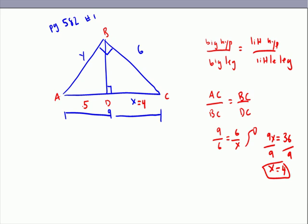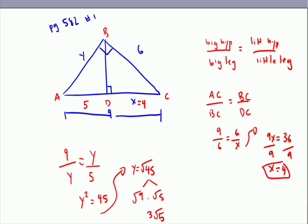And now we're just going to do the exact same thing again. So we're going to do the big hypotenuse, which is 9 over y equals y over 5. So we get y squared equals 45. And now we have the square root of 45, and the square root of 45 breaks down into, well, we know 9 goes in there. That's a perfect square, right? 9 radical 5. We break this down to 3 radical 5.